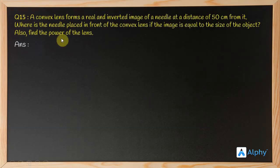Given: We have a convex lens and we got a real and inverted image of the object at 50 centimeters. Also, it is given that the image is equal to the size of the object.